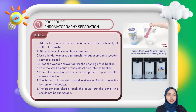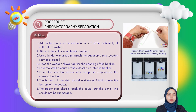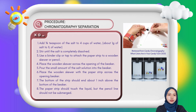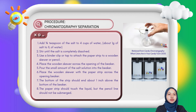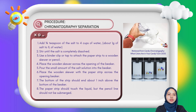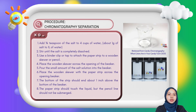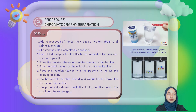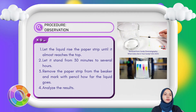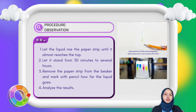For chromatography separation, add 1/8 teaspoon of salt to 4 cups of water and stir until completely dissolved. Use a binder clip or tape to attach the paper strip to a wooden skewer or pencil, and place the skewer across the opening of the beaker. Pour a small amount of the salt solution into the beaker. The bottom of the strip should end about 1 inch above the bottom of the beaker, and the paper strip should touch the liquid but the pencil line should not be submerged. For observation, let the liquid rise up the paper strip until it almost reaches the top — allow 30 minutes to several hours. Then remove the paper strip and mark with pencil how far the liquid traveled.